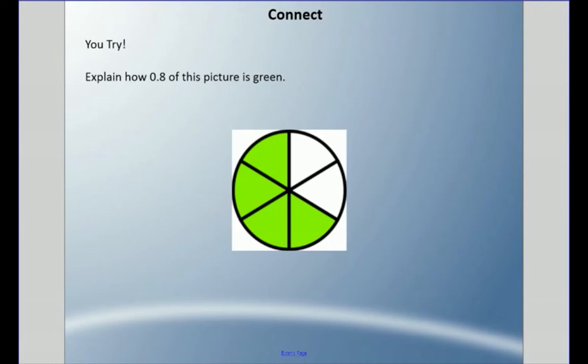One last one here. I'd like you to explain how 0.8, or eight-tenths of this picture, is green. Pause it. Come back when you're ready. I've got to admit, I tricked you here. I totally tricked you.